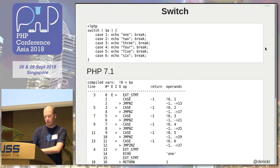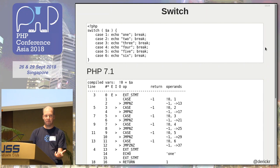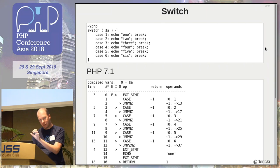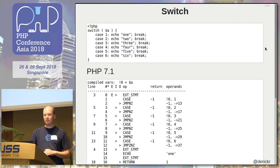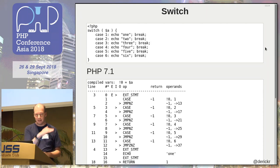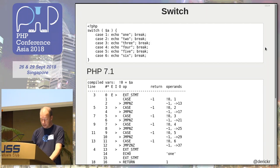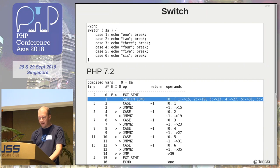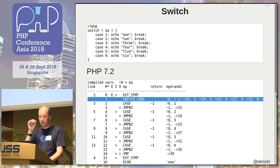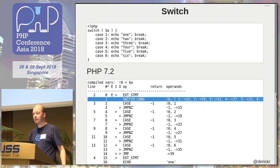PHP 7.2 adds some interesting functionality. If you look at how switch is implemented in PHP, it is basically a chain of if-else statements. So if you do switch A with case 1, it's essentially: if A equals 1, echo this; if A equals 2, echo that; else if A equals 3 — you know how this goes. The more case statements you have, the more comparisons PHP has to do. Now what PHP 7.2 does is make a lookup table up front, then compare the correct key — in this case numbers 1 to 6 — and immediately jump to the right location without having to do the if-else statements all the time. This makes PHP 7.2 faster.